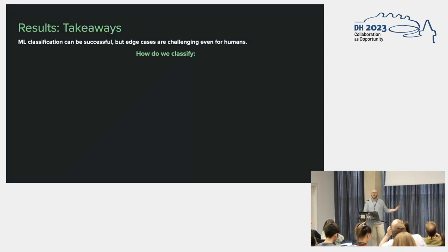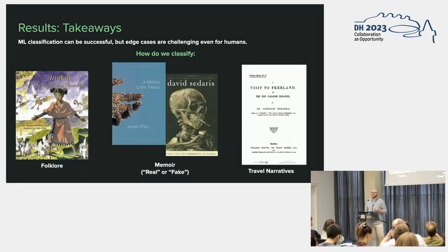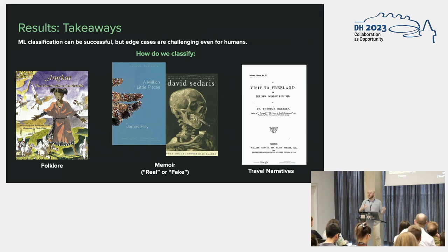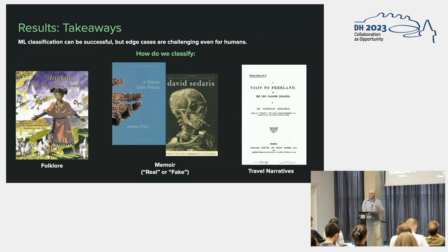The takeaways beyond the scores: we've pretty much shown this is a very successful way of identifying fiction, but on a more humanistic level, this is a really hard task even for humans. To appeal to algorithms to solve this for us is a bit naive. How do we classify folklore — fiction or nonfiction? How do we classify memoir, real or fake? And how do we classify travel narratives? We have a travel narrative called Visit to Freelands that was wholly made up but actually inspired real-life trips to find the places in the narrative. If it fooled contemporary people, it's probably going to fool an algorithm now — to think otherwise is a bit of a techno-superiority complex.